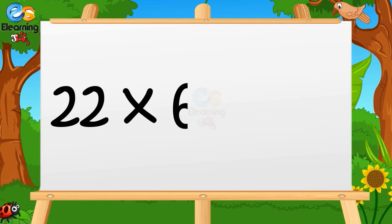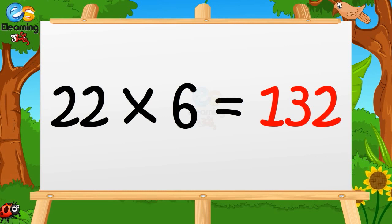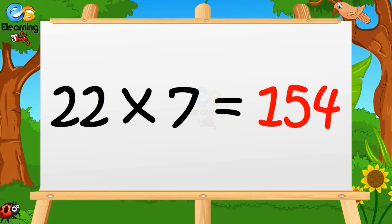Twenty-two sixes are hundred-thirty-two. 22 × 6 is 132. 22 × 7 is 154. 22 × 7 is 154.